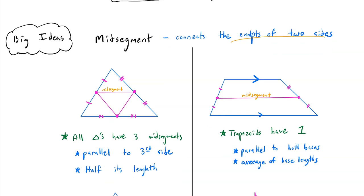So in a triangle, there's always three midsegments, right? Because there's three midpoints, and you can connect them in one, two, three separate line segments.